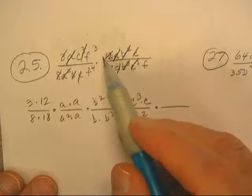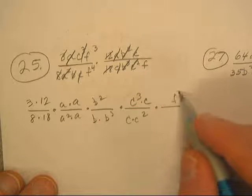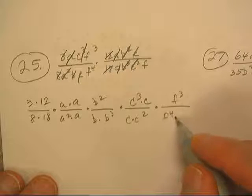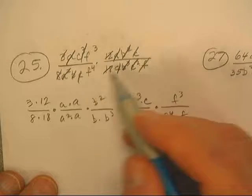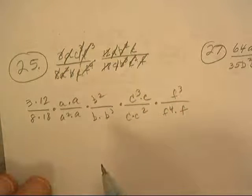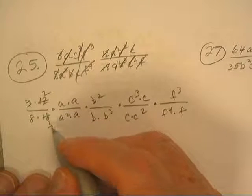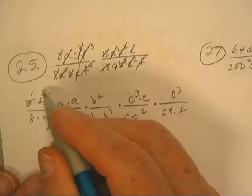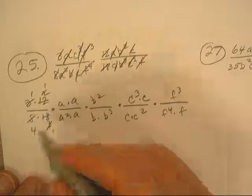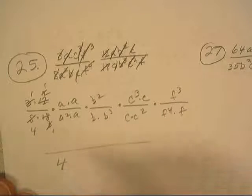F cubed, F to the fourth, F. Okay, so let's see. Six goes into that two, six goes into that three, three goes into three one, two goes into eight four. And my final answer I'm going to have a four down here in the bottom.